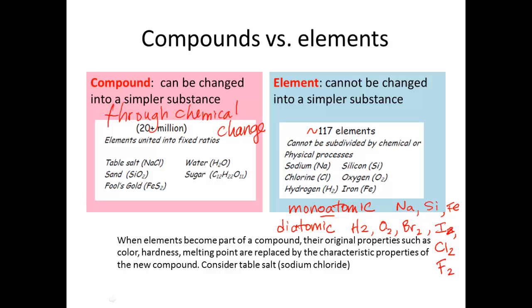So we have one, two, three, four, five, six, and the last one I'm forgetting is nitrogen. So hydrogen, oxygen, bromine, iodine, chlorine, fluorine, and nitrogen are the seven diatomic elements.